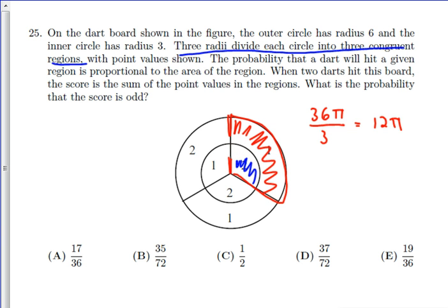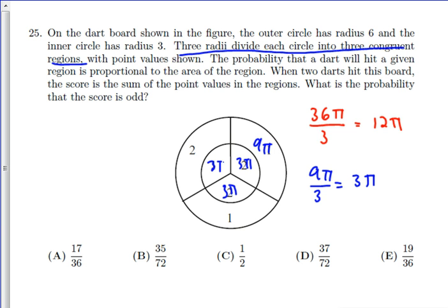So first we look at one of these smaller parts. They tell you this has a radius of 3. And so the area of the smaller circle is going to be 9π. And so each of the small regions are going to be 9π divided by 3, or 3π, which means that these regions are going to be 9π, because 12π minus 3π is 9π. So these are 3π, 3π, and so you can go through and do it.